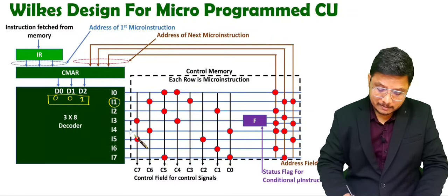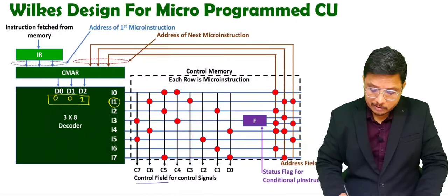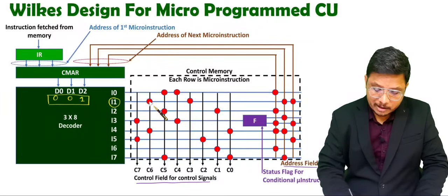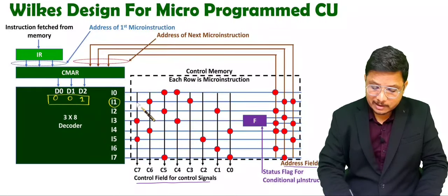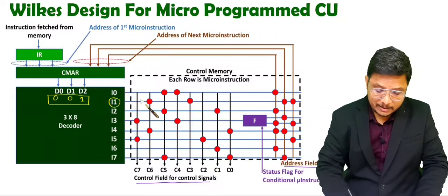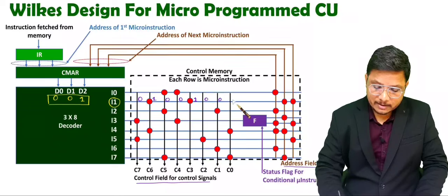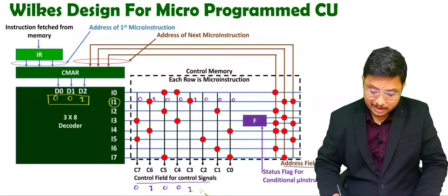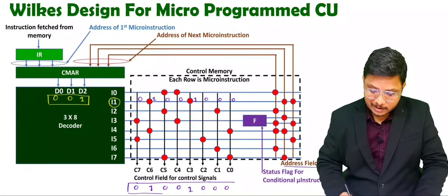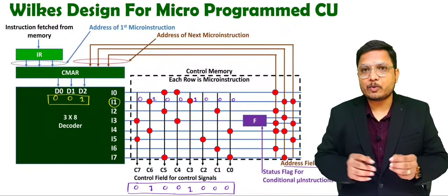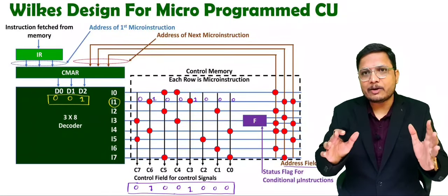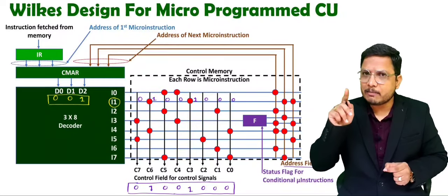Once I1 is selected, we look at the control memory. This control memory has two things: a control field and an address field. A dot in the memory represents logic 1, and no connection means logic 0. With I1 selected, the control signals read from the control field are: 0, 1, 0, 0, 1, 0, 0, 0. These are the control signals that will be performing some operation — one micro-operation — corresponding to that address.